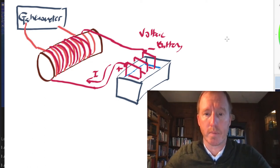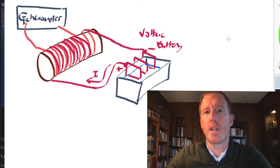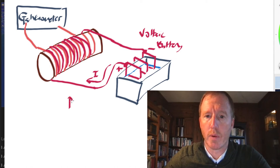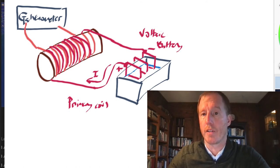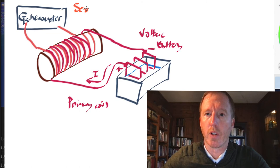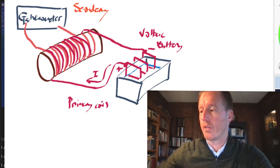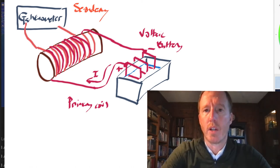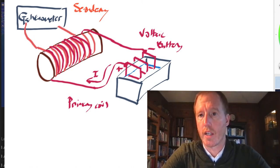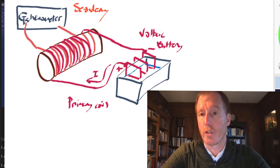By hooking up wires to the opposite ends, the copper and zinc ends, one can turn on electrical current passing through one of the coils. The voltaic battery drives an electrical current through this primary coil. What he's trying to do is see if an electrical current can be generated in the secondary coil by driving current through the primary.